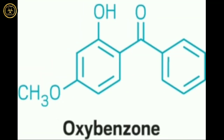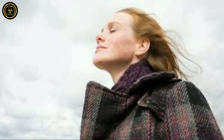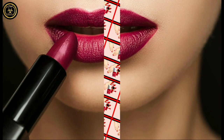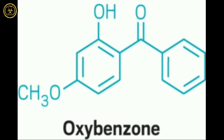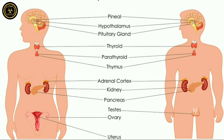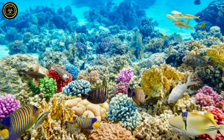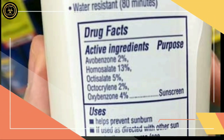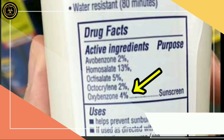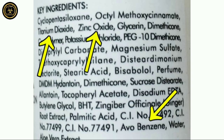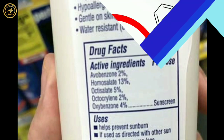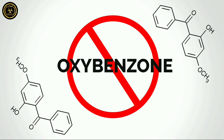Oxybenzone is a chemical compound used in products for girls such as sunscreens, lipstick, moisturizer, and nail polish. This chemical compound is activated by UV rays and is associated with cancer. It is also used in chemical compounds linked to coral reef damage. Alternatives include zinc oxide, titanium oxide, and avobenzone.